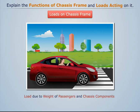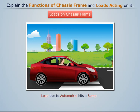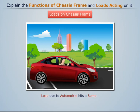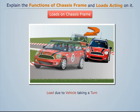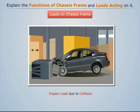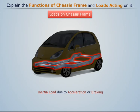The main types of loads are: load due to weight of the passengers and different components of the automobile; vertical loads when the automobile hits a bump; loads due to side wind and road camber; load due to the vehicle taking a turn; impact load due to collision of the vehicle; and inertia loads while accelerating or braking the vehicle.